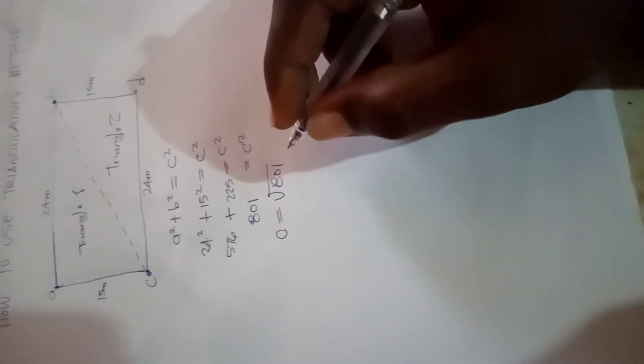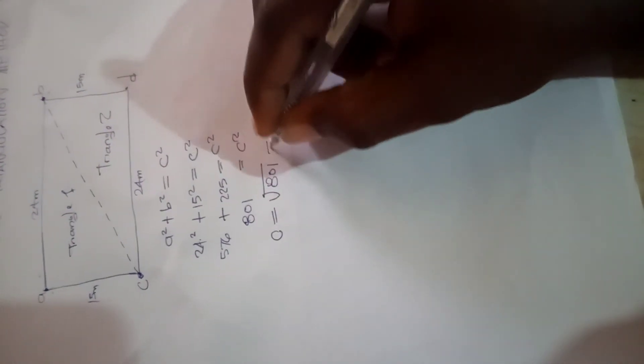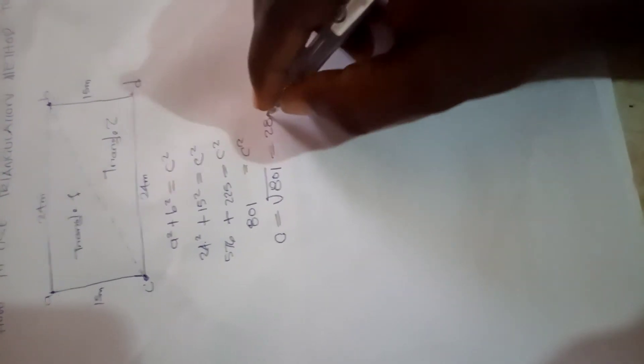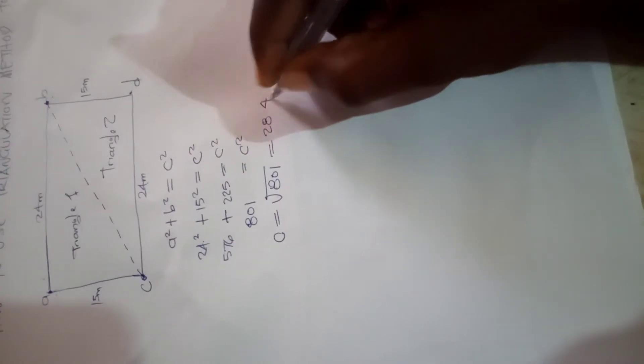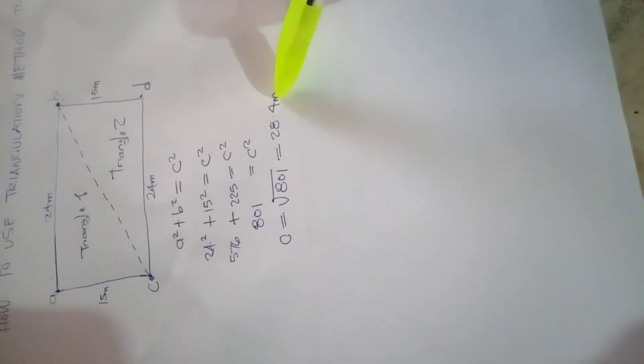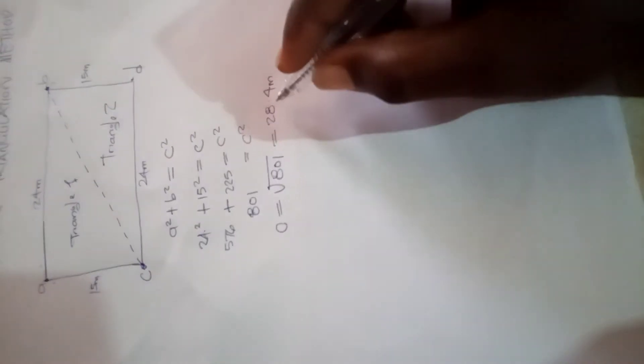Bringing this over: C is equal to the square root of 801. Using our calculator, you punch root 801, which gives us 28.4 meters. So 28.4 meters is the diagonal measurement — the hypotenuse — of these two triangles.